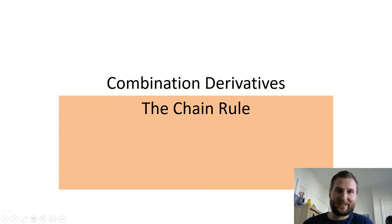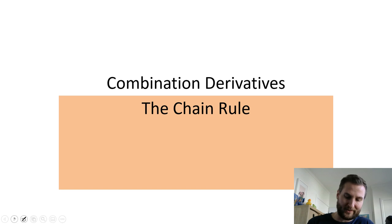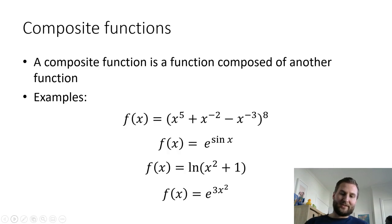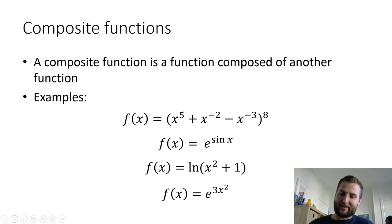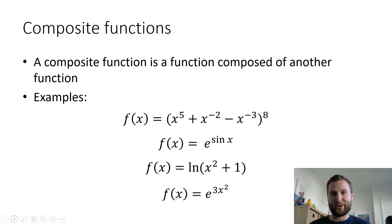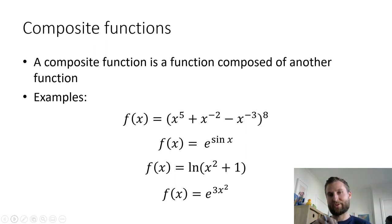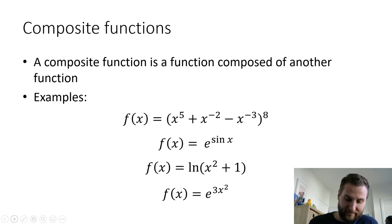Kia ora folks. The chain rule is the last of our special derivative combinations that we are going to look at. The chain rule involves what's called composite functions, or functions of functions, where a composite function means that you have one function that is actually composed of another function. Let's just look at some examples here.